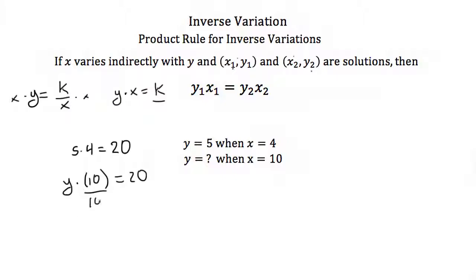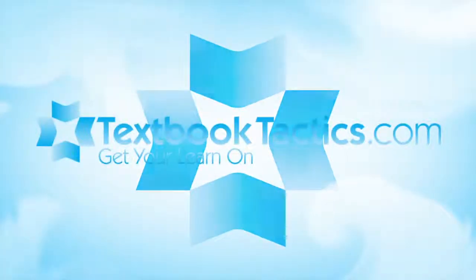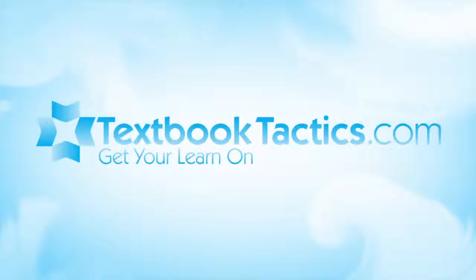Dividing both sides by 10 gives y equals 2. So if you're told x varies indirectly with y and you're given one point and one value of another point, you can easily find the second value. This completes the tutorial on inverse variation.